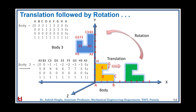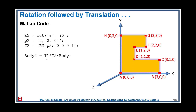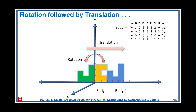Next, let's see what happens if we swap the order of these two compound transformations. In rotation followed by translation, the order changes: on the original body we first rotate, then translate. The body rotates 90 degrees and then translates 5 units in the x direction. As compared to the previous case, this produces an entirely new position and orientation of the body, demonstrating that in general transformations are not commutative.